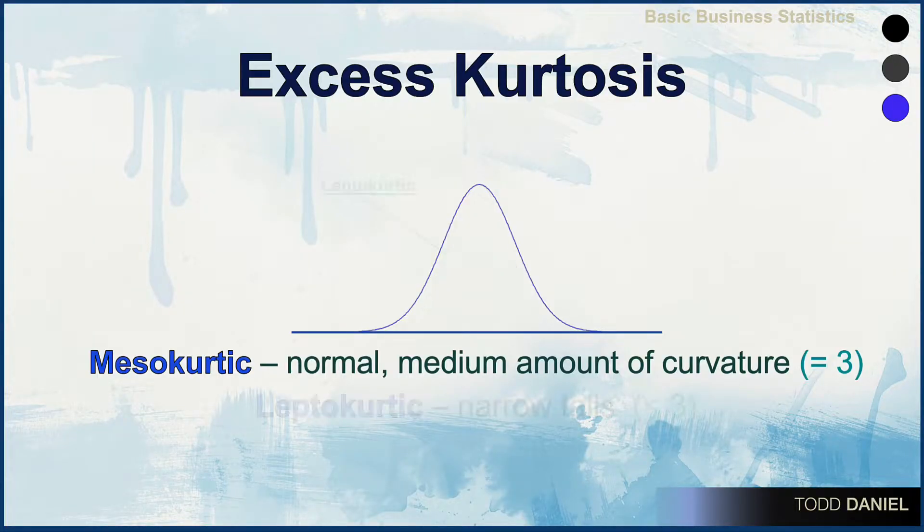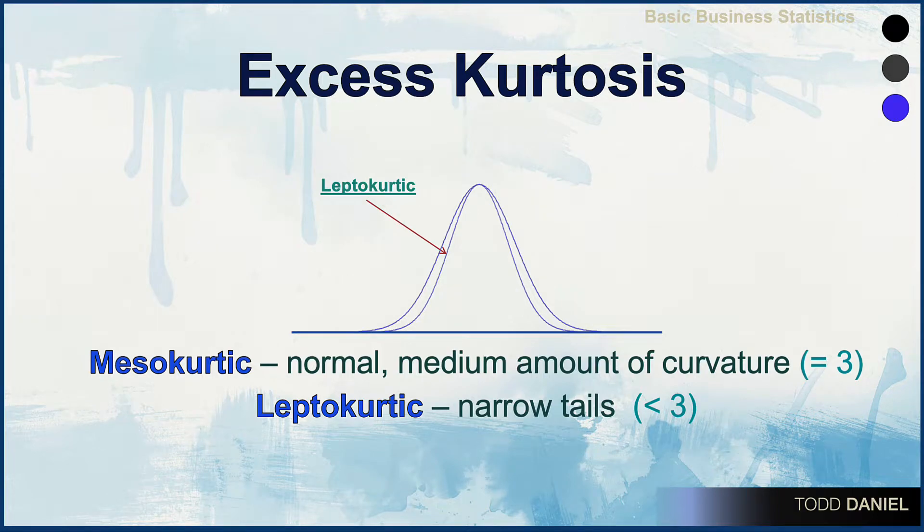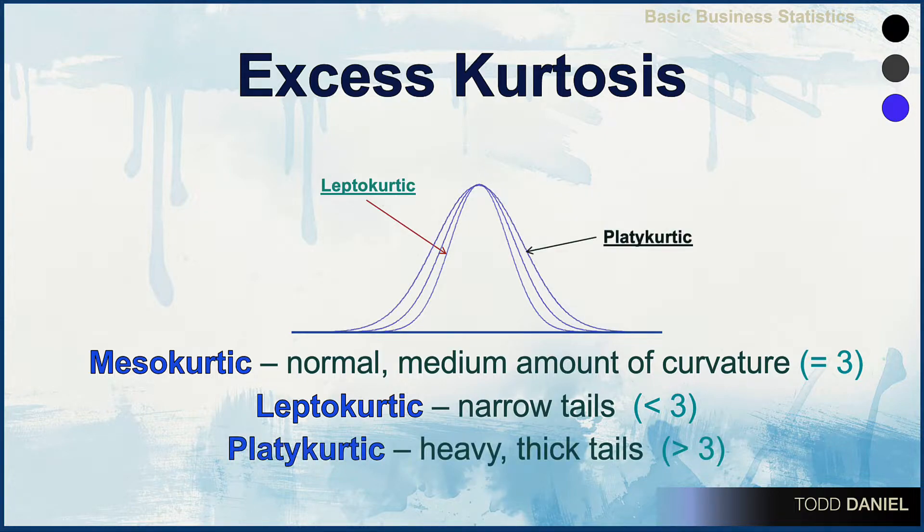In a leptokurtic curve, the tails are more narrow. Their kurtosis values are less than three. But in a platokurtic curve, the tails are thicker. Their kurtosis values are greater than three.